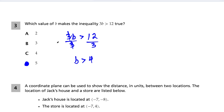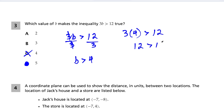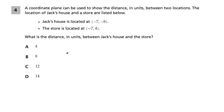You could also just plug in answer choices. If I plug in choice C, I do 3 times 4 and ask: is 3 times 4 greater than 12? This is not true because 12 is not greater than itself — 12 equals 12. So choice C is out. We could also plug in the other choices to show they're not true. Choice D is definitely our answer.